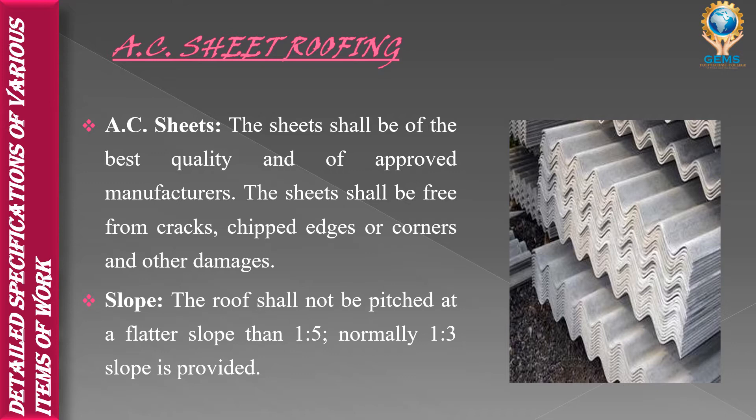The next point is slope. The roof shall not be pitched at a flat slope. Normally the slope of an AC sheet roof is provided in a 1:3 ratio. It should not be more than 1:5 also. In the 1:3 ratio, we can use AC sheet roofing.